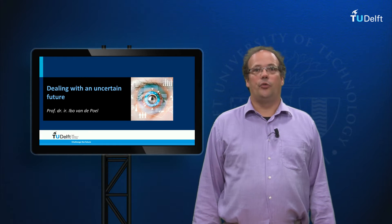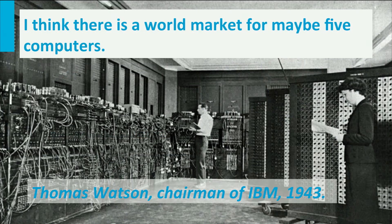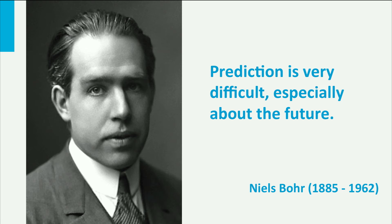Welcome to this web lecture on dealing with an uncertain future. In 1943, Thomas Watson, chairman of IBM, said 'I think there is a world market for maybe five computers.' The computer he was thinking of was a large mainframe computer, like the ENIAC seen in this picture. He could not know that there would be PCs, laptops, tablets, smartphones, and that nearly everybody would have one or even more than one computer in the future. This shows that it is hard to predict, especially if it concerns the future, as Niels Bohr already said.